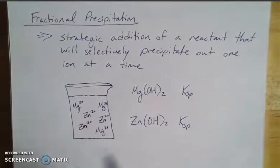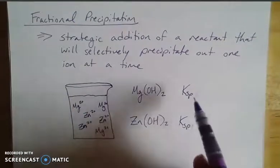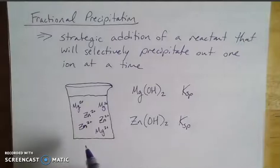then using fractional precipitation, one of these, if they have different KSP values, is going to come out of solution. It's going to precipitate out of solution faster than the other.